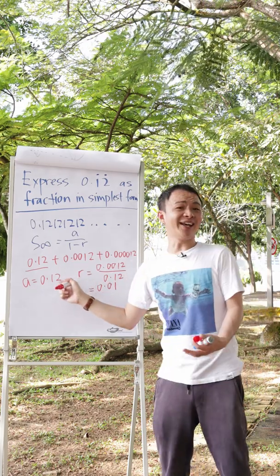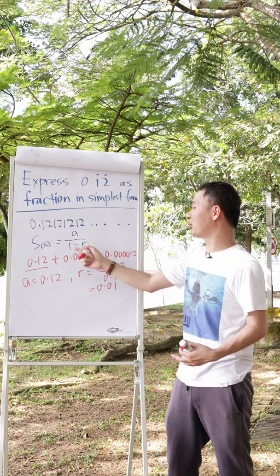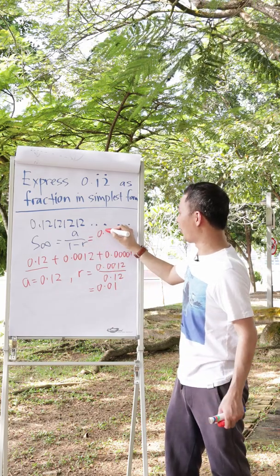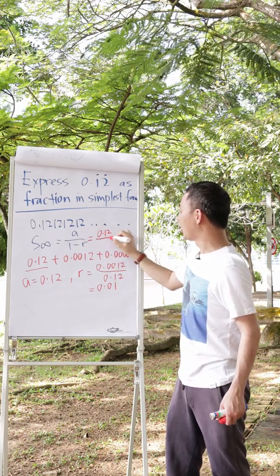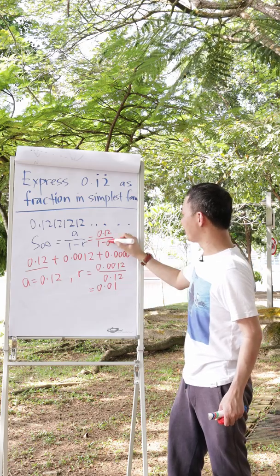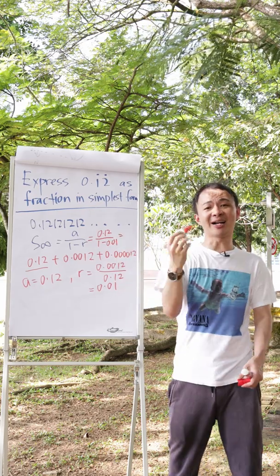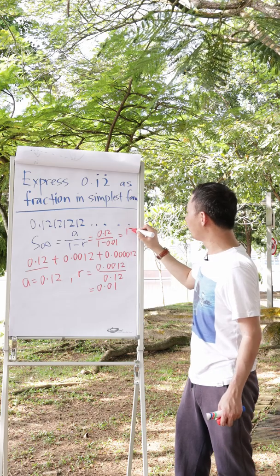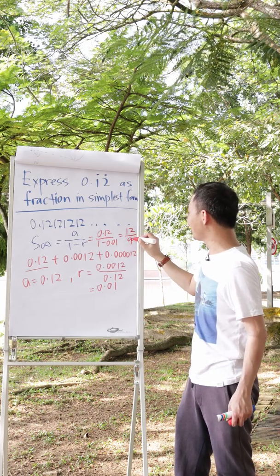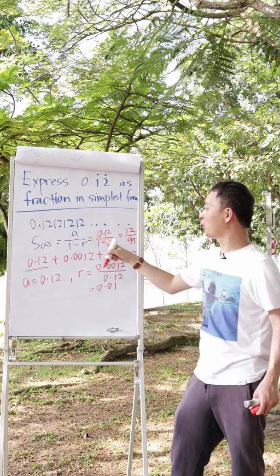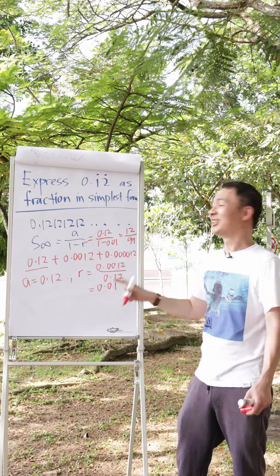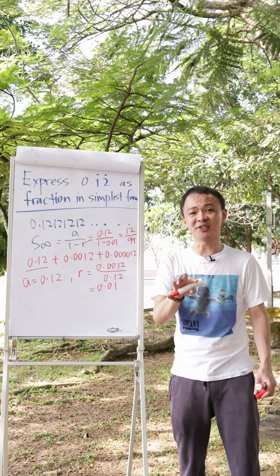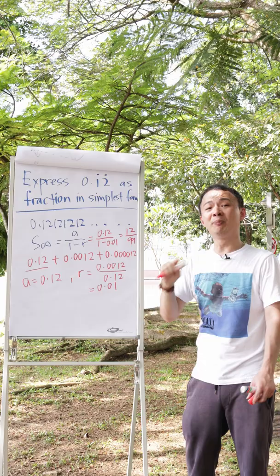After you get your a and r values, you just need to substitute into the formula. So I substitute: a is 0.12 over 1 minus 0.01. If I type that into the calculator, I should get 12 over 99, because it's 0.12 over 0.99 — multiply top and bottom by 100.